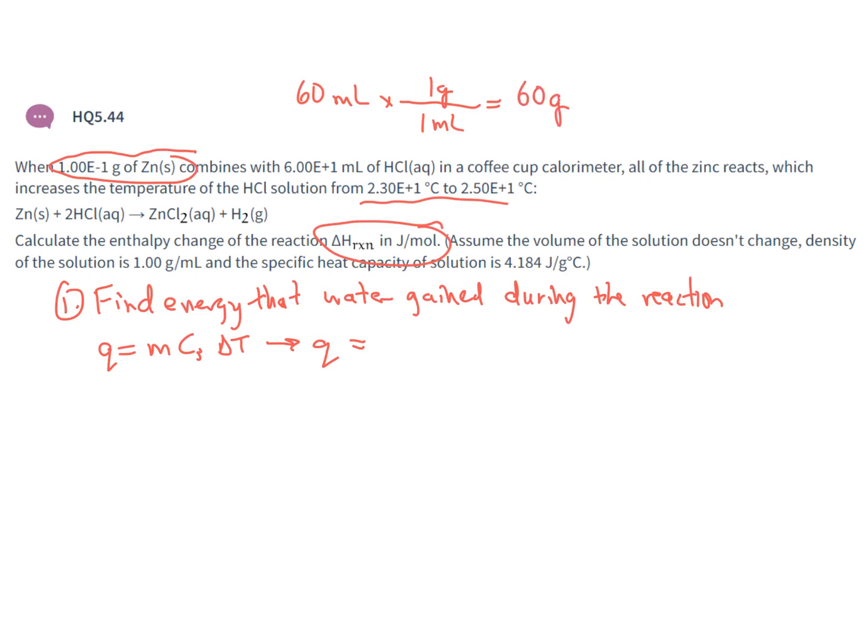So I have 60 grams of water and the specific heat of water is 4.184 joules per gram times degrees Celsius and my temperature change is 2 degrees Celsius. So I multiply that together to find that the energy that the water absorbs during the course of this reaction is somewhere on the order of 502.08 joules.